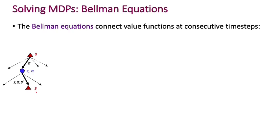Having defined the state and action value functions, we are now ready to encounter the Bellman equations, which are a cornerstone of all of reinforcement learning. The Bellman equation connects value functions at consecutive time steps. There are Bellman equations for both the state value function and the action value function. We'll write down a version for the state value function now. First, let's observe that the state value function and the action value function are actually closely related.